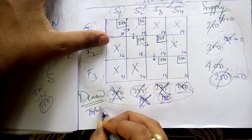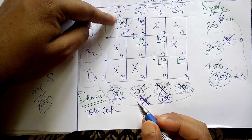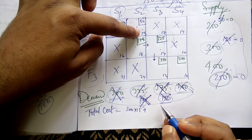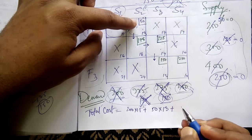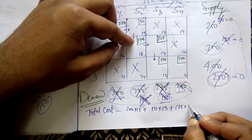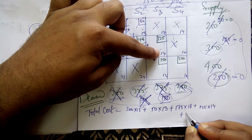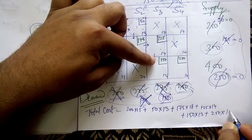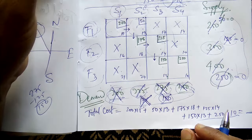Now the question is how to find the total cost. It is simple: one item costs 11 rupees and 200 items were transported, so 200 × 11. Plus 50 × 13. Plus 175 × 18. Plus 125 × 14. Plus 150 × 13. Plus 250 × 10. Whatever value you get from this sum is your answer — the total cost of transportation.